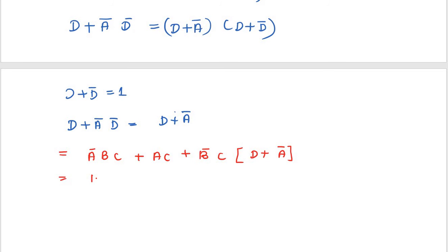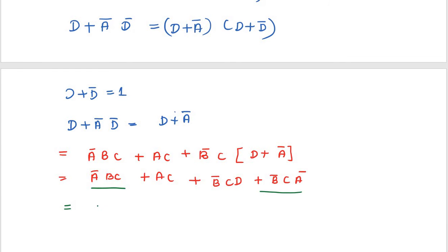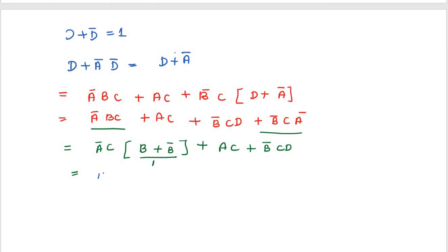Expanding: A'BC + AC + ACD' ... wait — expanding B'C(D + A') gives B'CD + A'B'C. So the full expression is: A'BC + AC + B'CD + A'B'C. Now take the first term A'BC and the last term A'B'C — A'C is common, giving A'C(B + B').